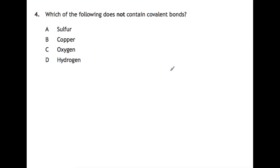Question 4. Which of the following does not contain covalent bonds? So for there to be covalent bonds, it has to be between two non-metals. So sulfur is a non-metal, so if it bonds with itself it will be covalent. Copper is a metal, so bonds through metallic bonding, whereas both oxygen and hydrogen are non-metals, so will contain covalent bonds.